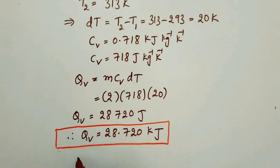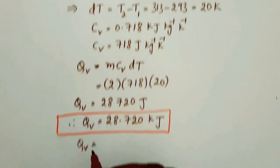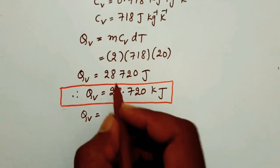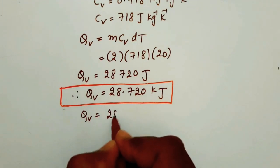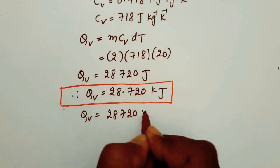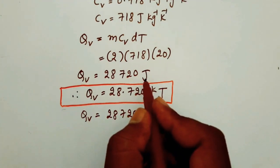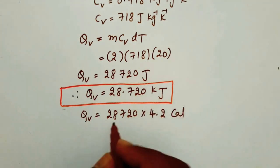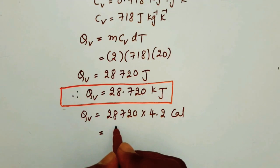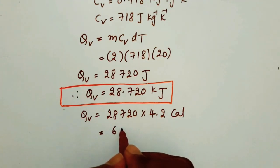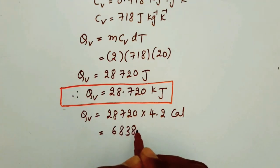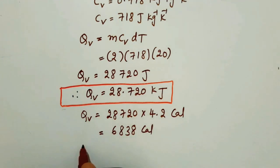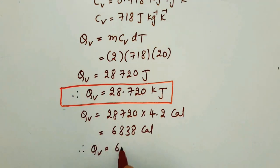Here QV divided by 4.2 kJ gives us 6,838, so we can get Q is equal to 6.838 kcal.